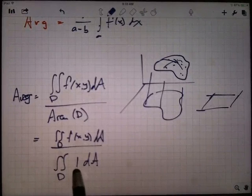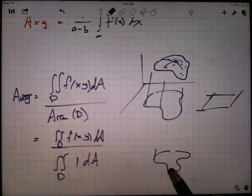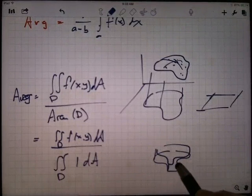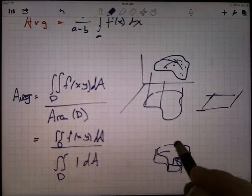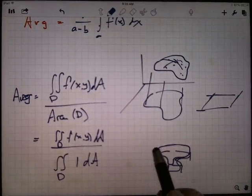We'll come back to this, but if you think about some region here, and you just give it height 1 everywhere. Everywhere, you've got height 1, so you make a little cylinder, essentially.